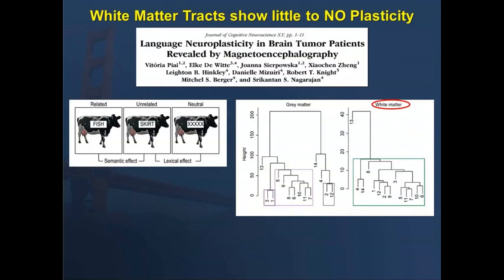Another aspect of plasticity has to do with the language system. It points out something we learned as we started doing subcortical mapping: using any paradigm we used to test, the plasticity issues are much greater and much more likely in the cortical region than they are in the subcortical network. The subcortical system is much more resistant to injury and thus plasticity, so you have to be very careful about that concept.